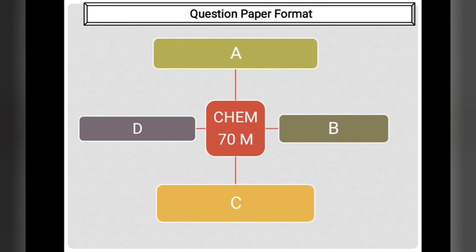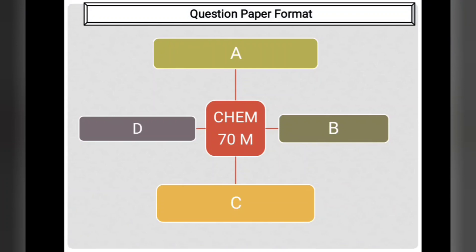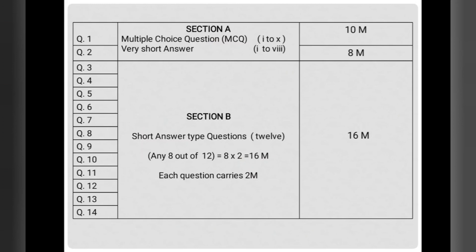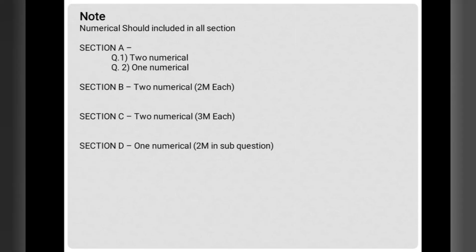The question paper is divided into four sections: Section A has 18 marks, Section B has 16 marks, Section C has 24 marks, and Section D has 12 marks. Each section contains at least one or two numericals. If you are lacking in organic chemistry with formulas and structures, you can solve maximum questions from physical and inorganic chemistry.